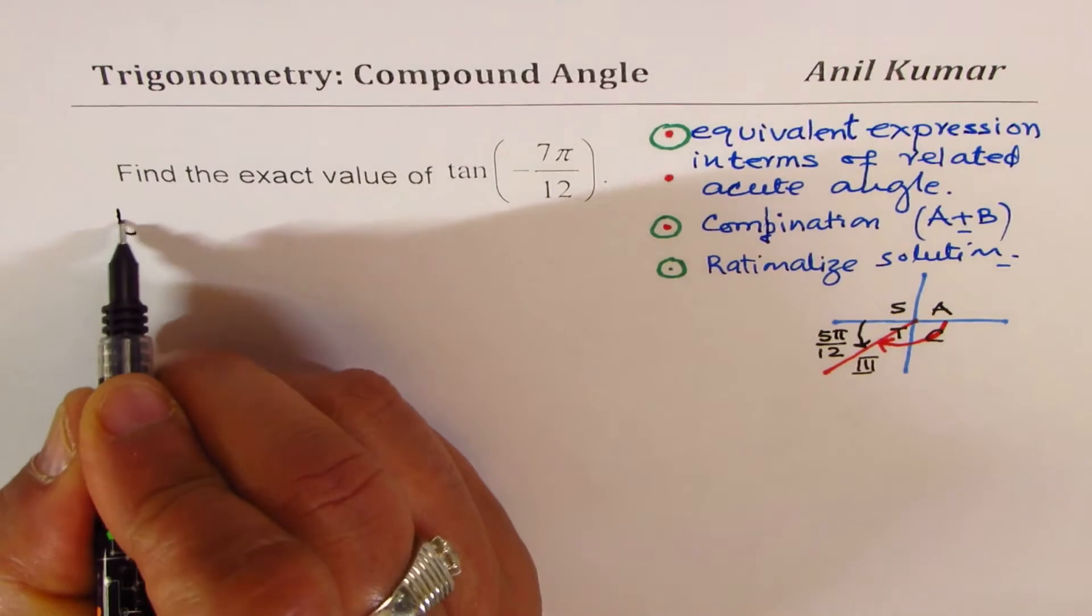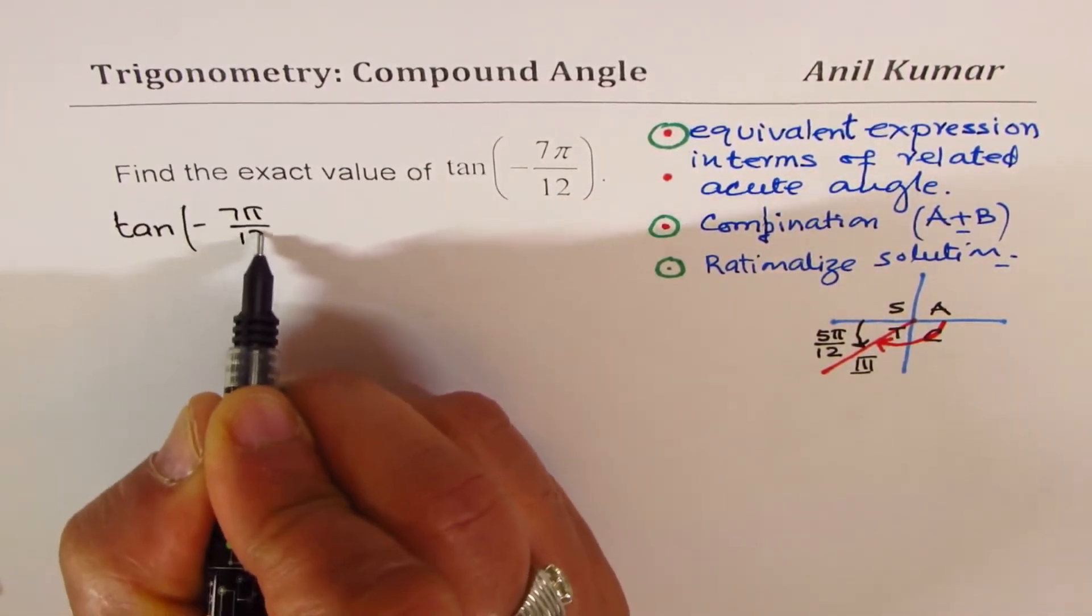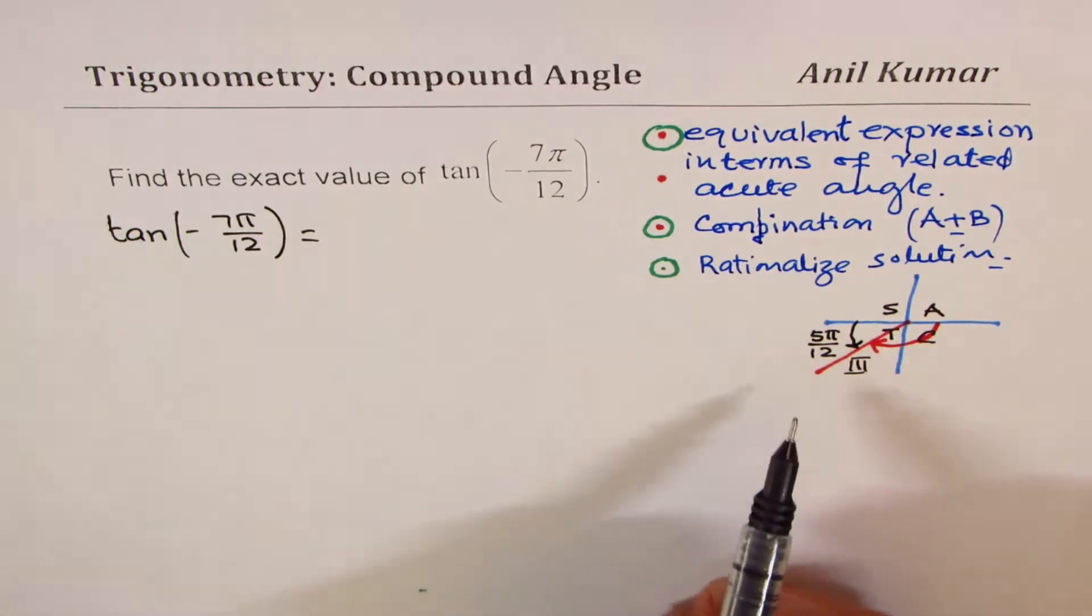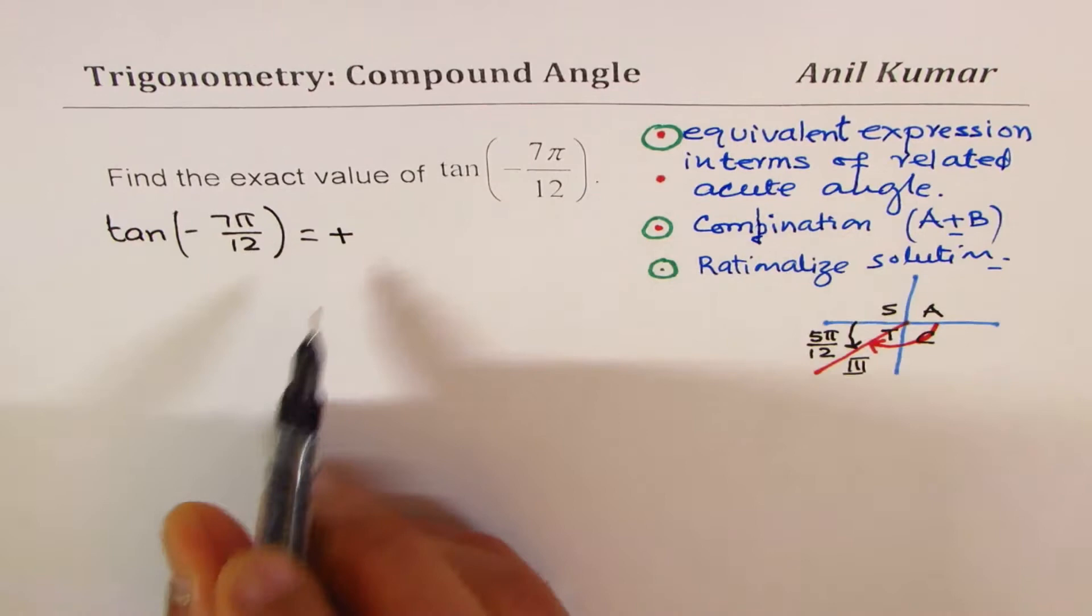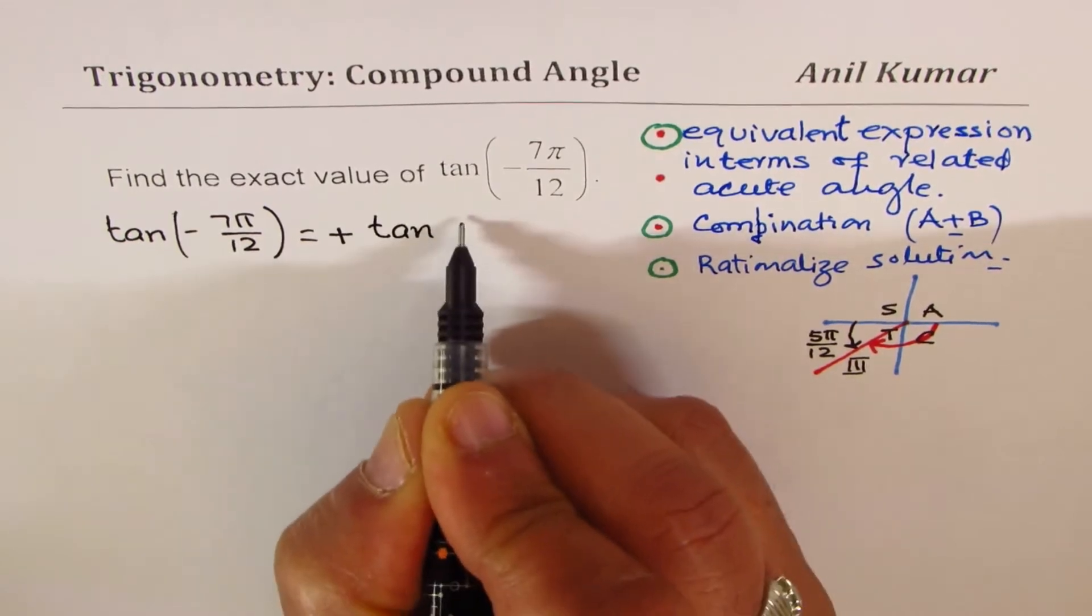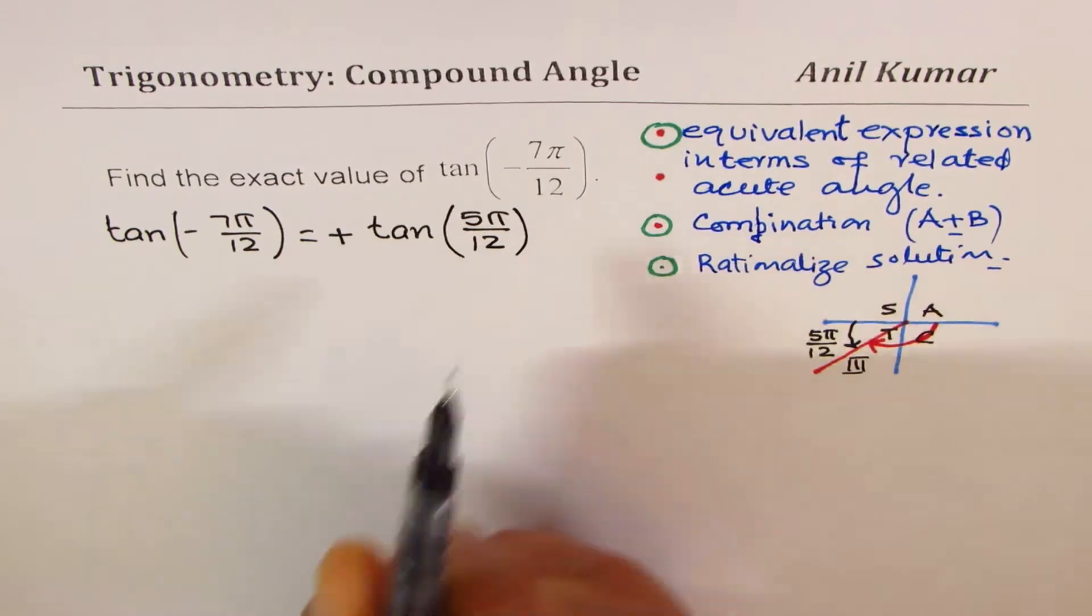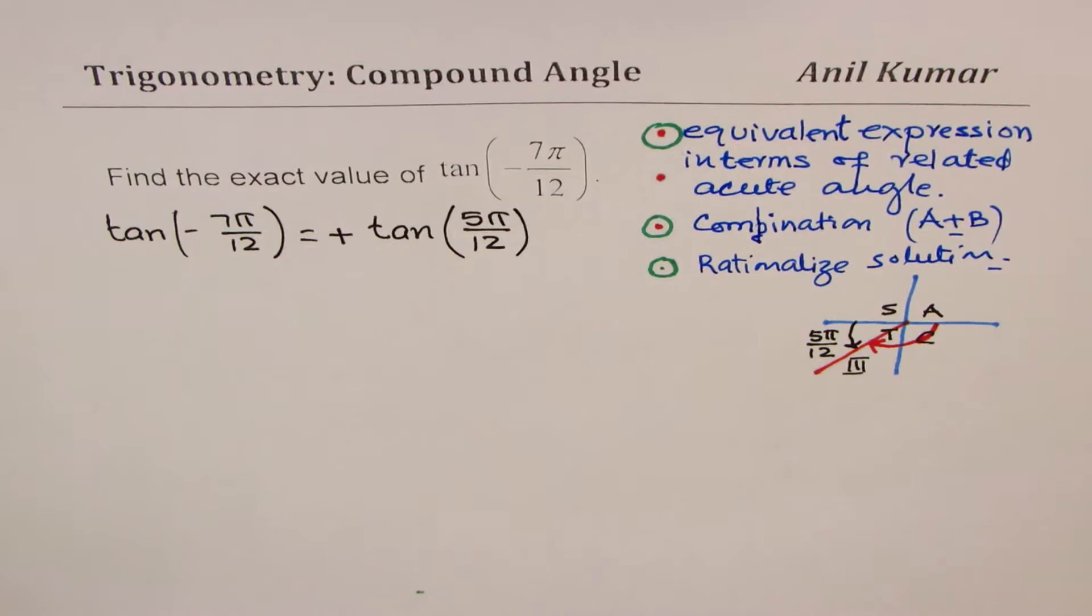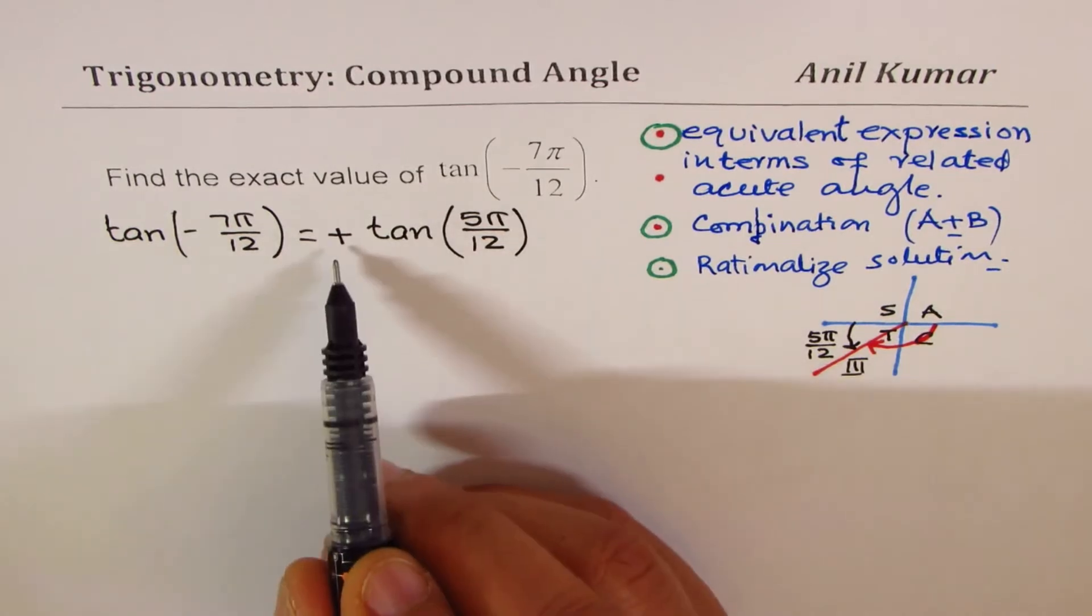Now what is the related acute angle? Since the π has been divided into 12 parts, we are left with 5, so this is 5π/12. Therefore, I could write tan(-7π/12) as an equivalent expression in terms of related acute angle. Tan is positive, so we write this as tan(5π/12).